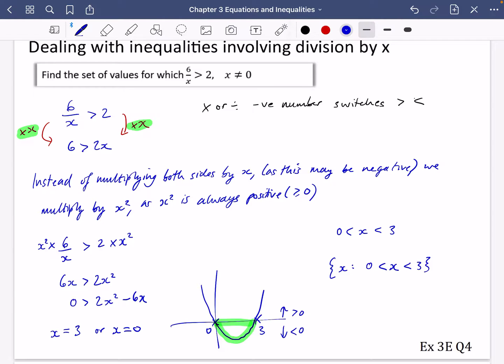Now let's just see if this works. If I put in a number like, let's try a negative number, x equals negative 1. Well, I would have 6 over negative 1, I would have minus 6 is greater than 2. Well, that's not true. So that's outside the range, and I was expecting that to happen.